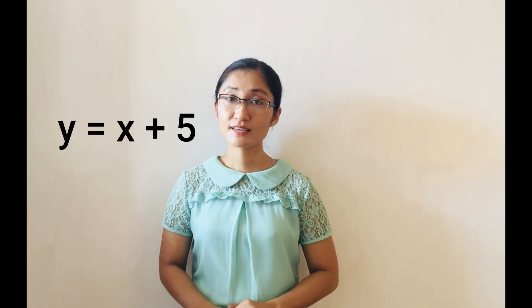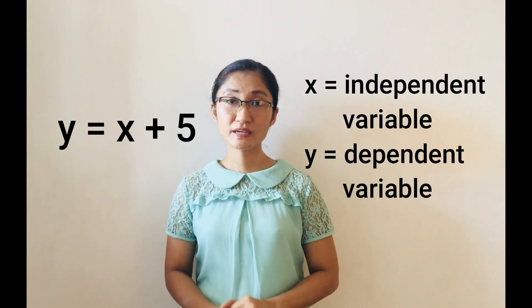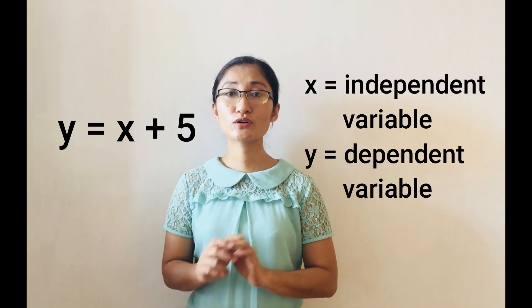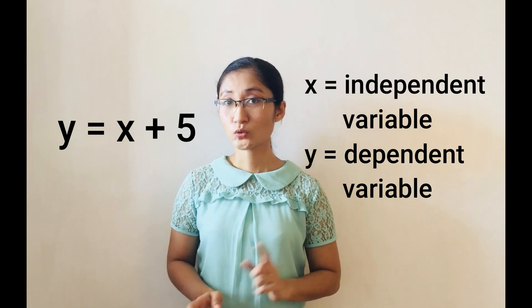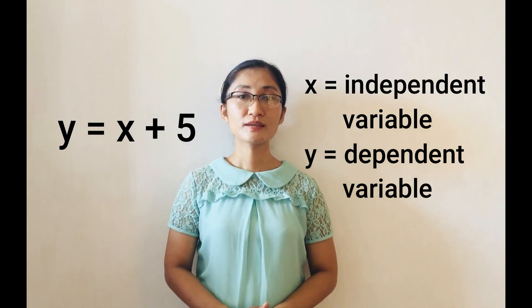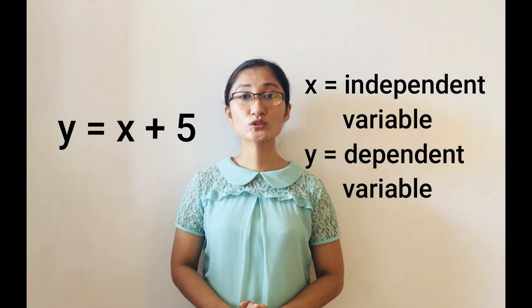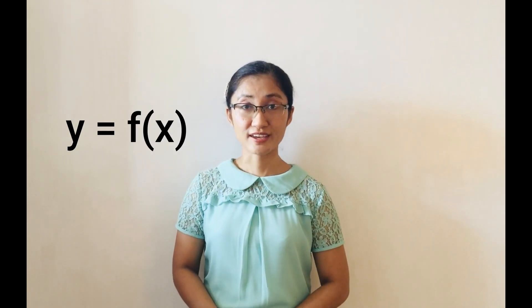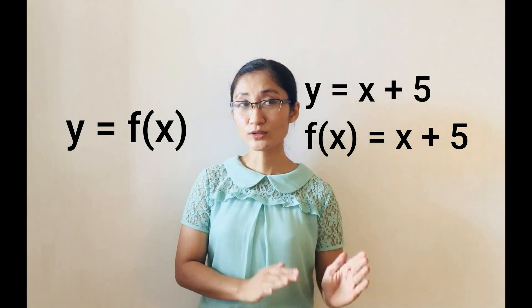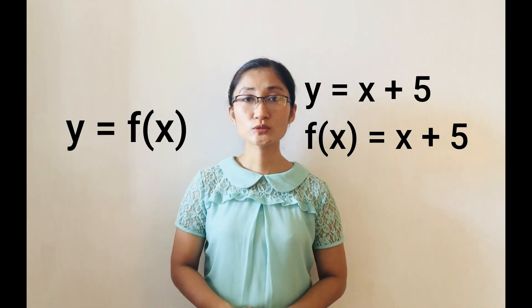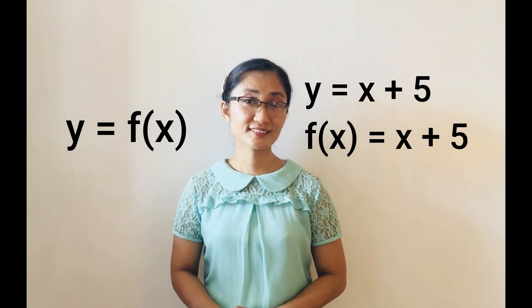Just like in the case of the equation y equals x plus 5. In that case, x is the independent variable and the value of y depends on the value of x, so y is the dependent variable. Now, in a function, y can also be expressed as f of x. So y equals x plus 5 can also be expressed as f of x equals x plus 5.